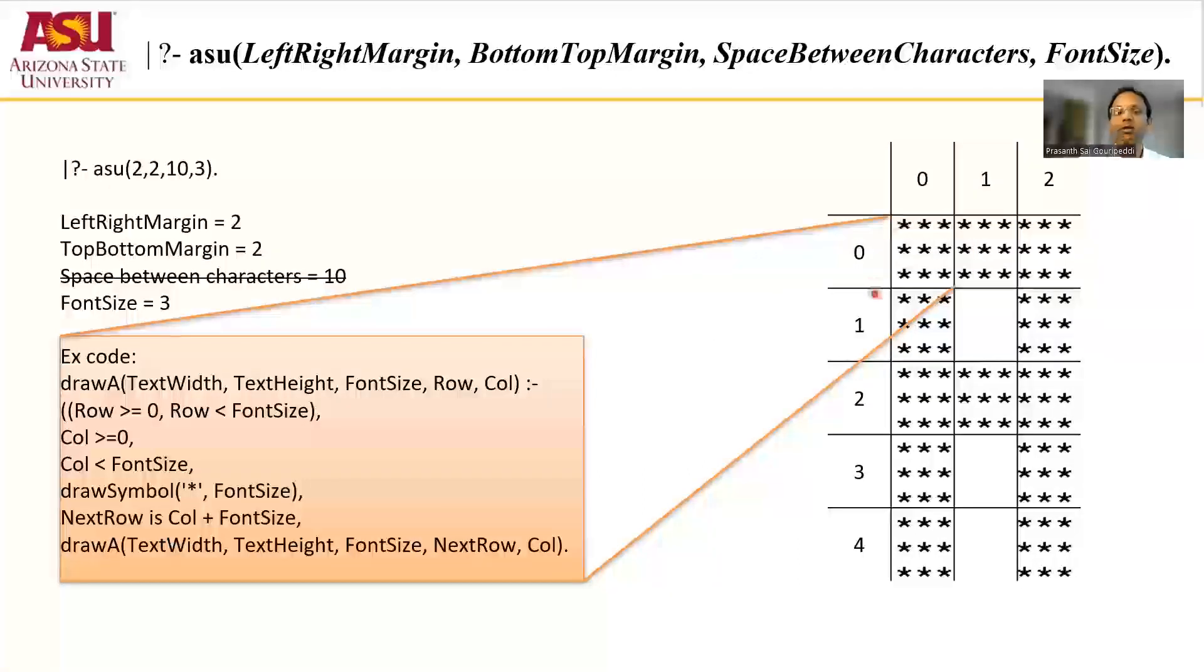So if you take this one particular cell, the best way to go about doing it is row-wise. Given a particular row, you decide based on the number of columns what would you be printing in that place - will it be a star or a space? In this case of this cell (0, 0), the code would look something like this: it's row 0 to row font size (that is these three), and it is column 0 to column font size (that is these three). What do we have to put in? Stars. So what we do is write font size number of stars, followed by incrementing the row by one and then printing again font size number of stars.